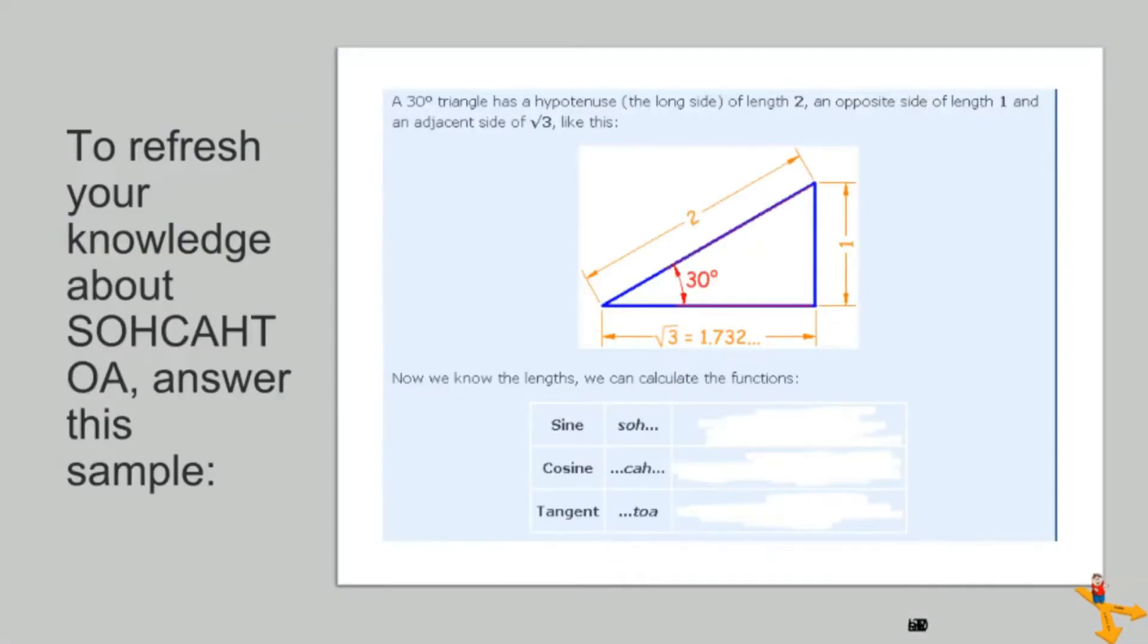To refresh your knowledge, let us answer this simple problem. A 30 degree triangle has a hypotenuse of length 2, an opposite side of length 1, and an adjacent side of square root of 3, as shown on the figure. Now, try solving for the functions.